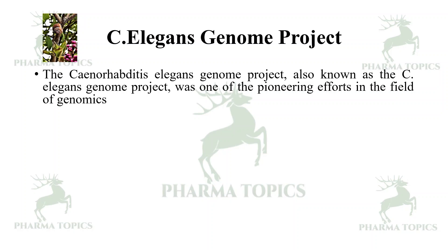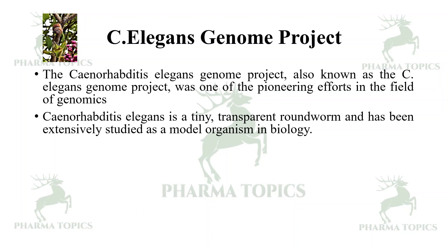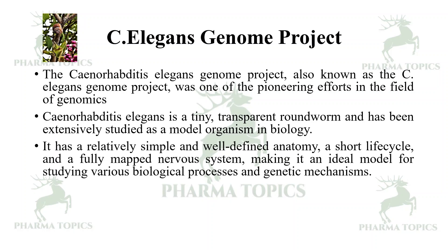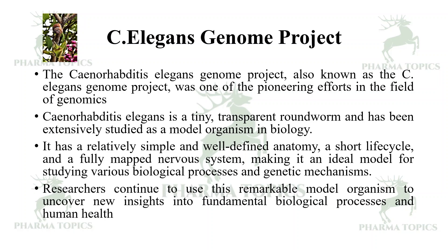The C. elegans Genome Project, sequencing Caenorhabditis elegans, was one of the pioneering efforts in the field of genomics. C. elegans is a tiny transparent roundworm extensively studied as a model organism in biology. It has relatively simple and well-defined anatomy, a short life cycle, and a fully mapped nervous system, making it an ideal model for studying various biological processes and genetic mechanisms. Researchers continue to use this remarkable model organism to uncover new insights into fundamental biological processes and human health.